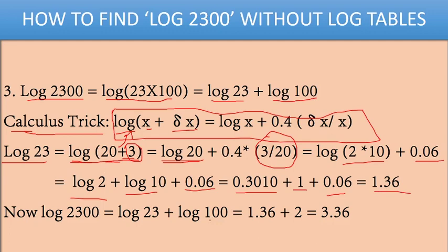Now our task is to find log 2300. Log 2300 equals log 23 + log 100. We got log 23 as 1.36, and log 100 is 2. So 1.36 + 2 equals 3.36. Using this calculus formula, without using log tables, we got the answer. Log 2300 equals 3.36.